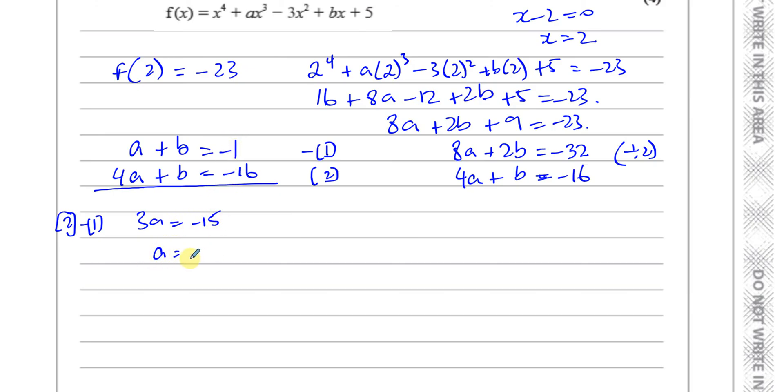So a is going to be -15/3, so a is -5. So that's the value of a.